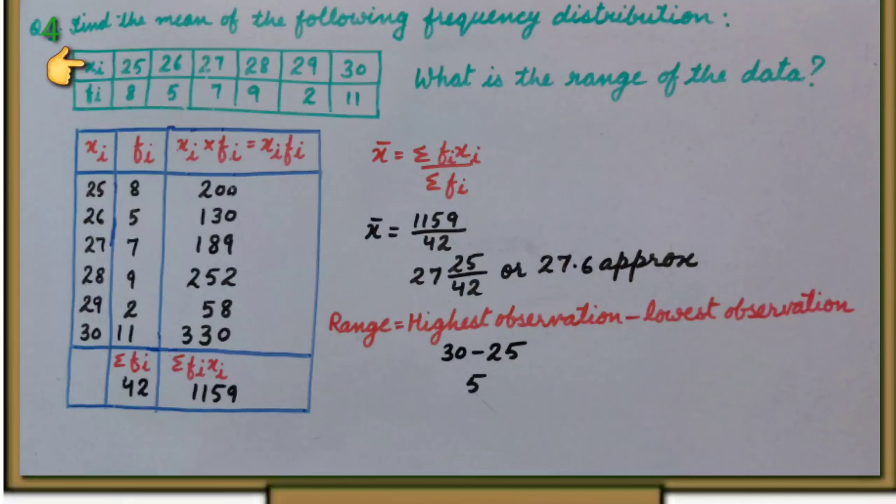Xi is given as 25, 26, 27, 28, 29, 30 and the frequencies are 8, 5, 7, 9, 2 and 11.